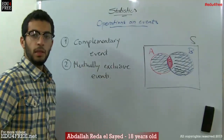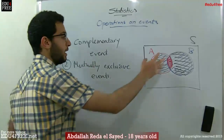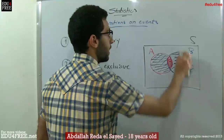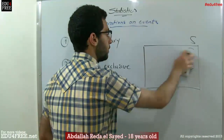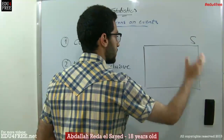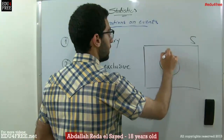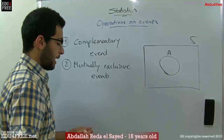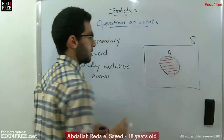The complementary event is an event that complements the event concerned — the event that we are talking about. To explain this more, let's say we have our sample set, the big sample set S, and we have the event A inside S. A represents this part of S.